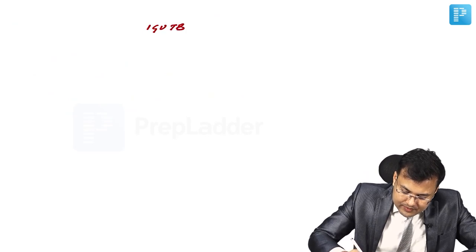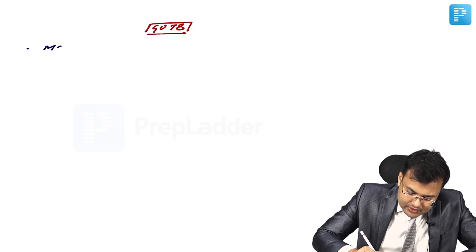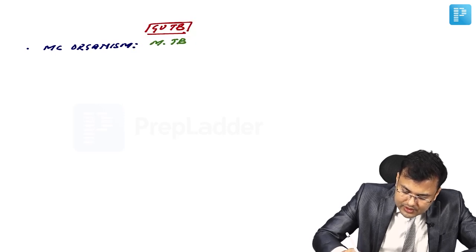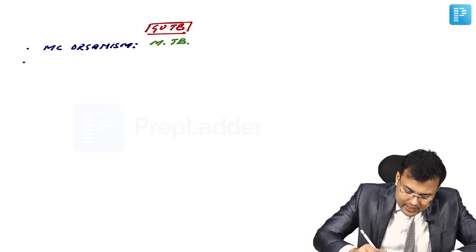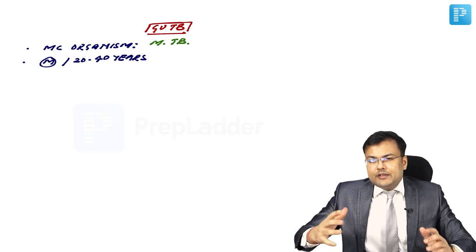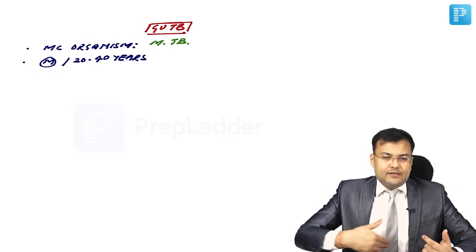Genitourinary tuberculosis. The most common organism is Mycobacterium tuberculosis. It is more common in males, and the age group affected is 20 to 40 years.